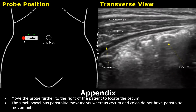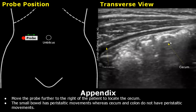Move the probe laterally to the right of the patient to locate the cecum. Here we can see the abdominal muscles in cross-section: the external oblique, internal oblique, and transversus muscles. Below these muscles we can see the cecum. It is filled with gas and gives us dirty posterior shadowing. The cecum will not have peristaltic movements, whereas the small bowel will. That is how you can distinguish a cecum from a small bowel.